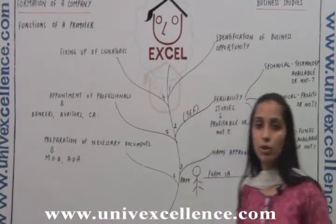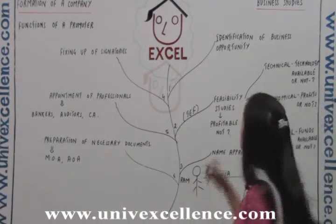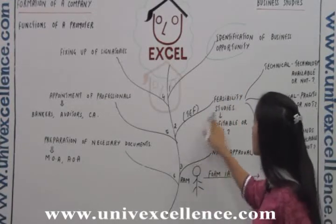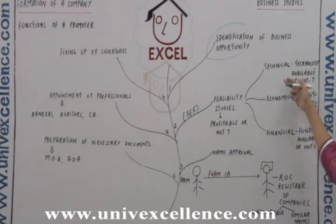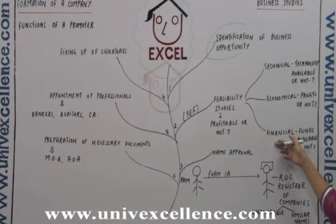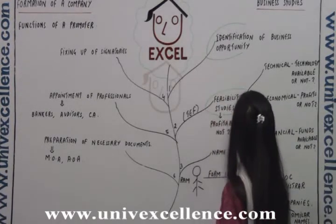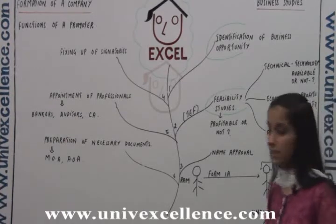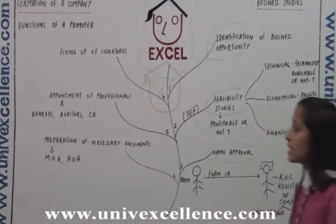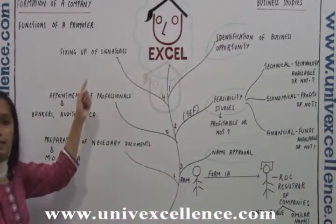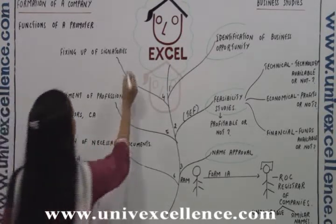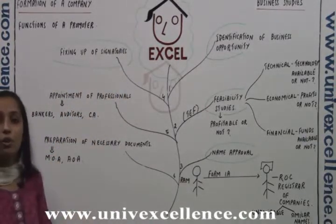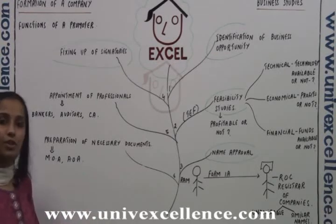These are the six functions of the promoter. Let's quickly revise so that we can memorize them. First is identification of opportunity. Second is feasibility study — technical feasibility, economical feasibility, and financial feasibility study. Third function is to get the name approved from the registrar of companies. Fourth function is fixing up of signatories who will sign the memorandum of association. Fifth function is appointment of professionals like bankers and auditors who will help in formation of the company.